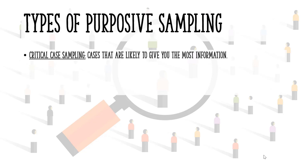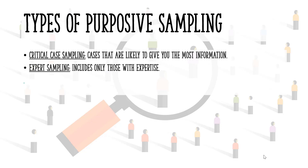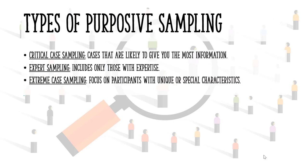Here are a few of the different types of purposive sampling. With critical case sampling, you're collecting cases that are likely to give you the most information about the phenomenon you're studying. With expert sampling, you're going to include only those people with expertise in a certain area.